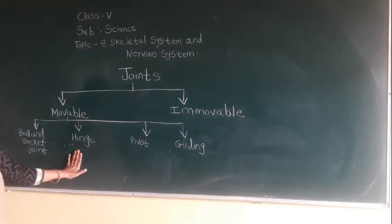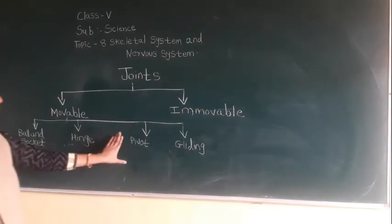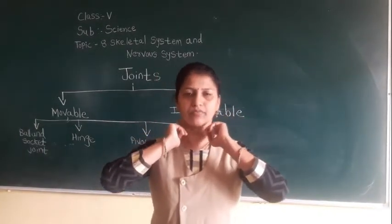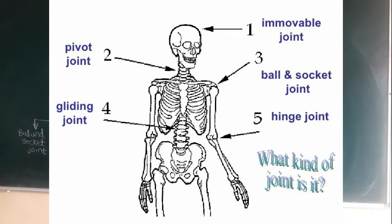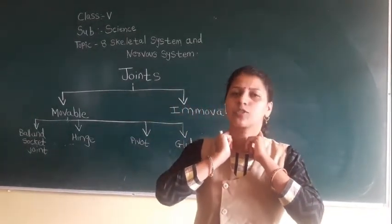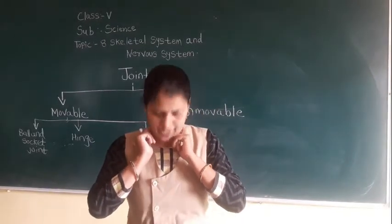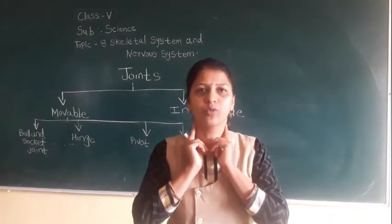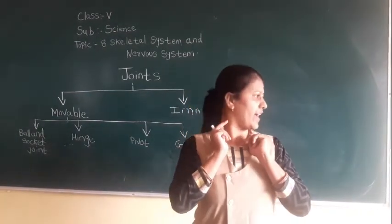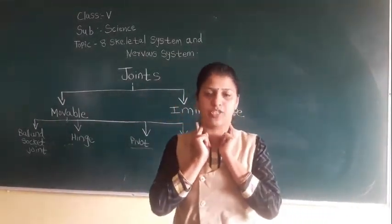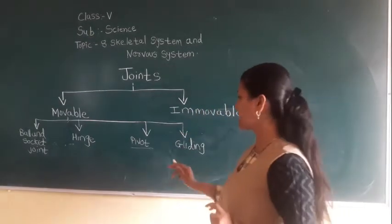The next movable joint is the pivot joint, which is present in our neck. The skull is attached to the backbone at this point. The pivot joint helps us move our neck up, down, and side to side.